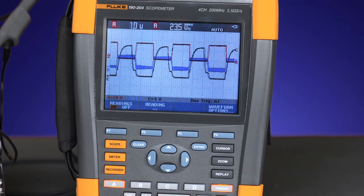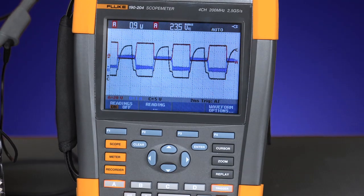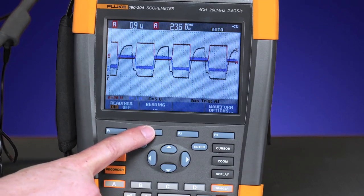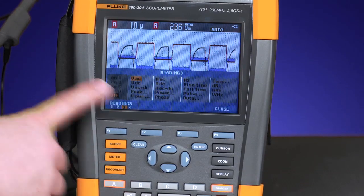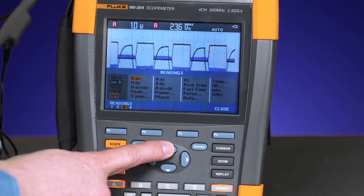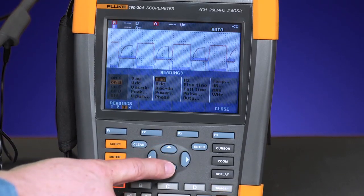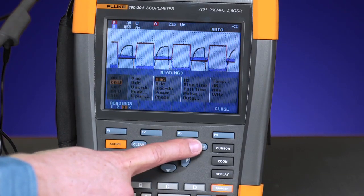For our final measurement, we're going to look at the current on input B. Once again, select my reading, then reading three. Choose input B. Now we're set up to measure current on input B.